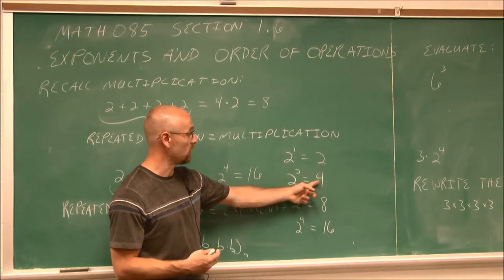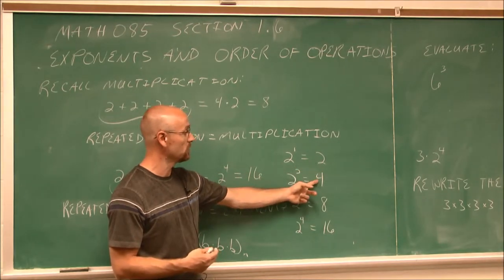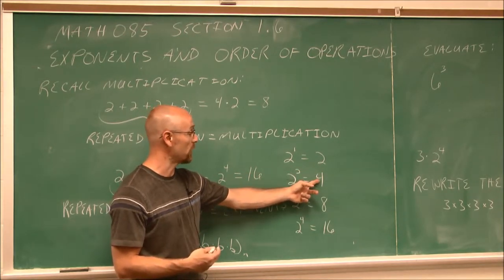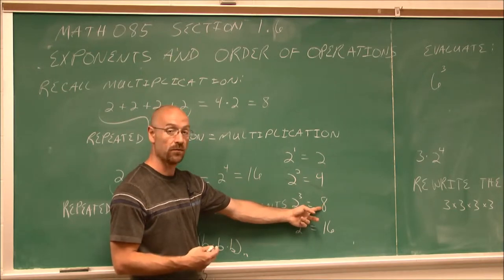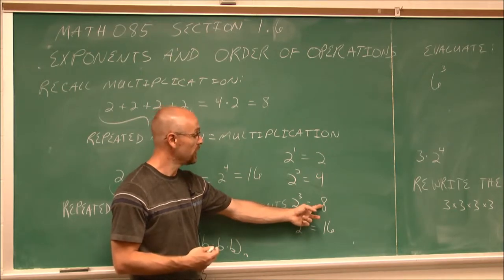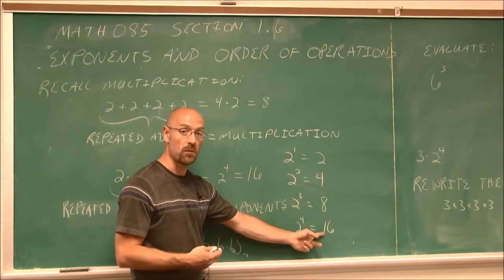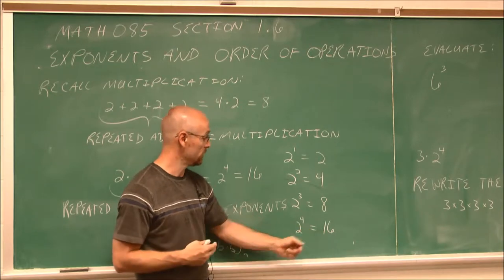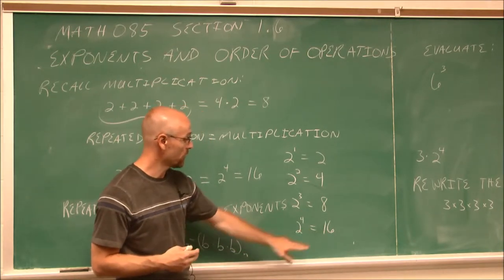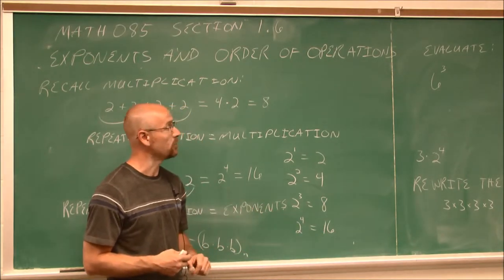You'll notice this is just multiplying each result by 2. We had two factors of 2; if I multiply by 2, I now have three factors of 2; if I multiply by 2 again, I've multiplied 2 four times, giving us 16.